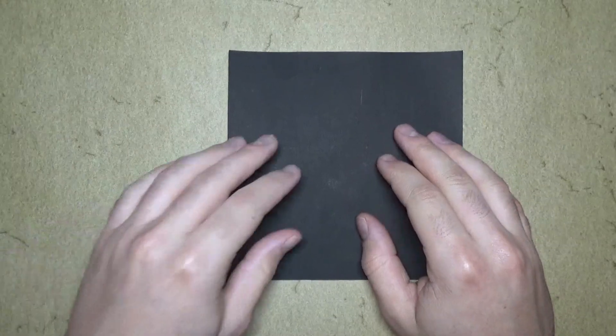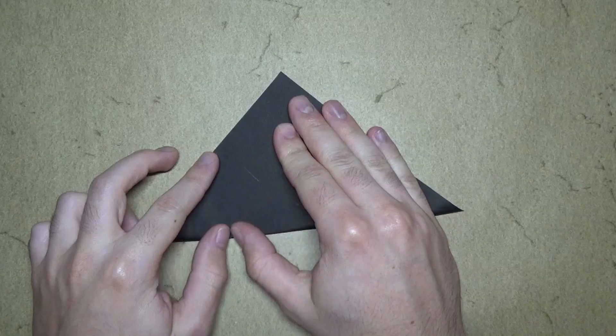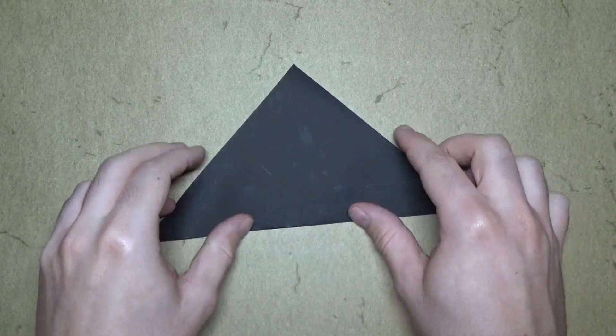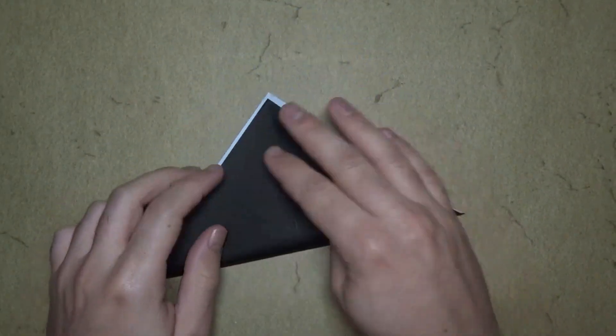Okay, so for this model, I'm going to use a 6 inch square of Kami. So we'll begin with the white side up. And fold in half. Unfold. And fold in half this way too. We're making a fish base.